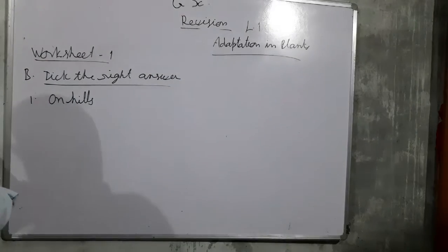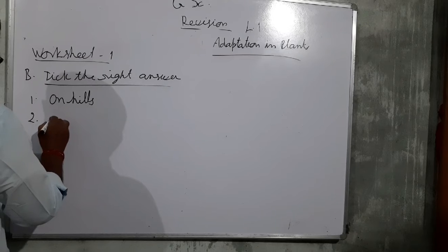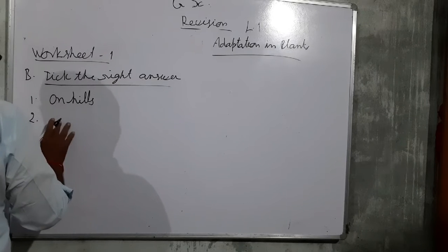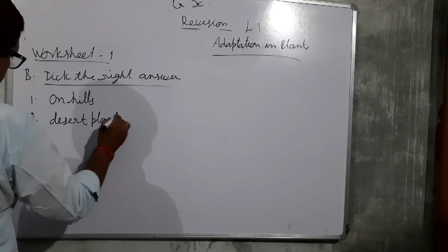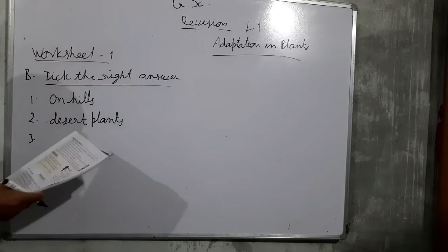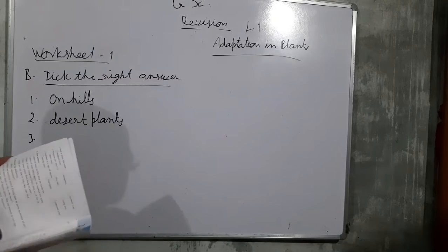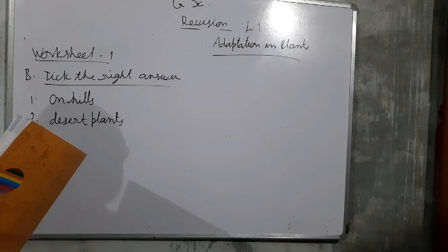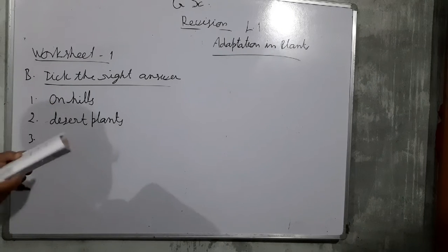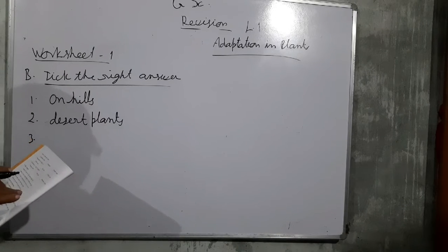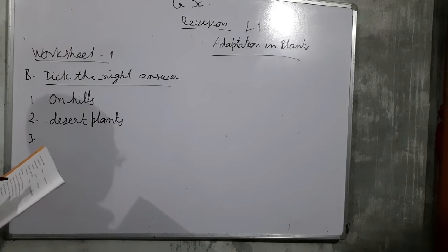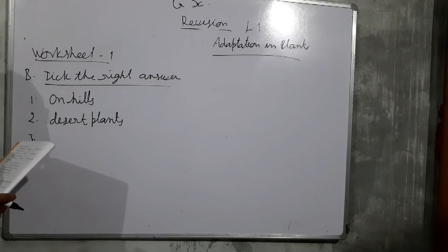The answer is desert plants. Third question: trees in plains are called — options are deciduous trees, mangroves, and evergreen plants. Evergreen plants are found in hilly areas, mangrove plants are found in marsh areas, and in the plains, deciduous trees are found.